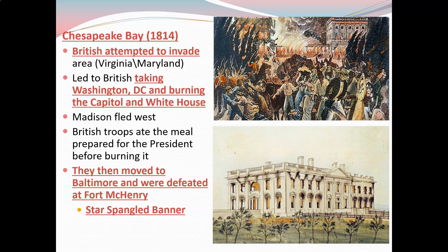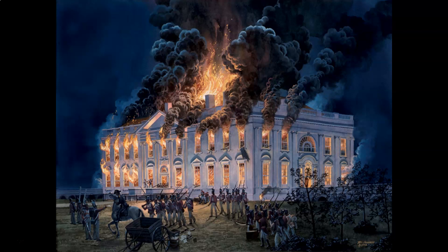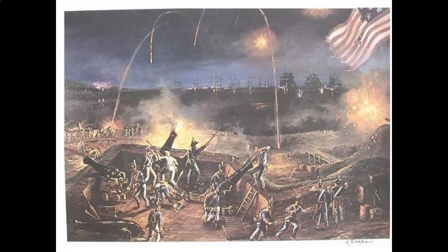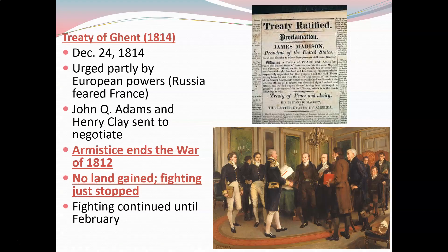Then they moved to Baltimore. Unfortunately for the British, they were defeated at Fort McHenry — and this is where Francis Scott Key penned the Star-Spangled Banner. At Fort McHenry during the battle, Francis Scott Key penned the National Anthem as a poem while on a ship in the Baltimore Harbor, and it was later expanded upon. The rockets' red glare, the bombs bursting in air — it gives you an idea of why it was written that way.